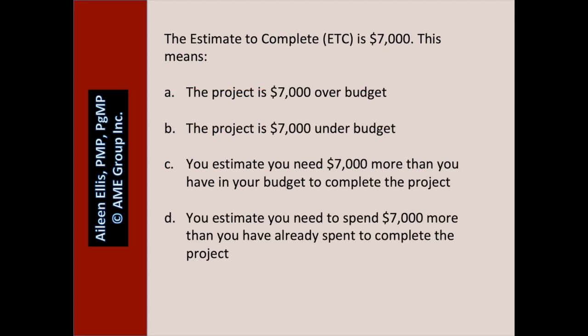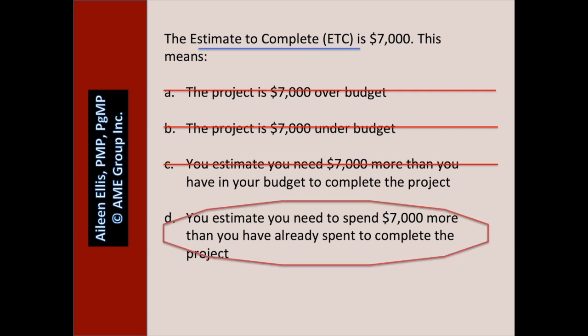The estimate to complete is $7,000. This means — ask yourself: what does ETC mean? It means we need to spend $7,000 more to finish the project. A: the project is $7,000 over budget — we don't know. B: the project is $7,000 under budget — we don't know. C: you estimate you need $7,000 more than you have in your budget — we don't know. All we know is that you estimate you need to spend $7,000 more than you have already spent to complete the project. That is what ETC means.